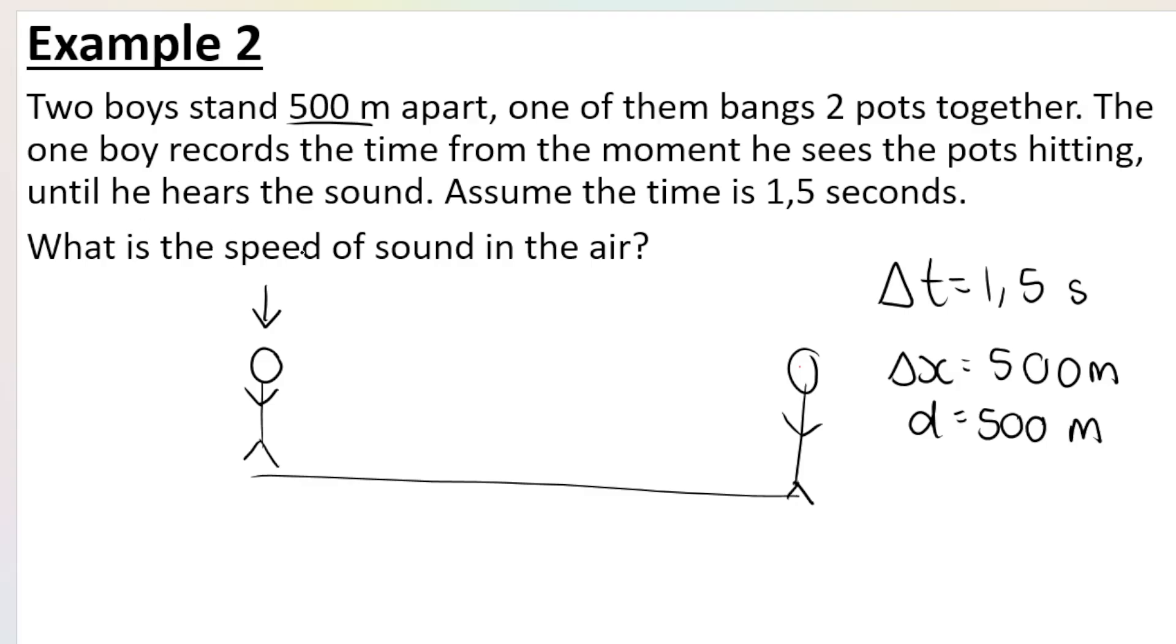They want to know what is the speed of sound in air. So we're looking for v, we're looking for speed. Now we just spoke about this formula v = fλ. In this case however this formula doesn't necessarily make sense because we don't know the frequency of the wave. We also don't know the wavelength of the wave.